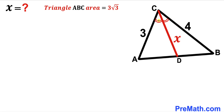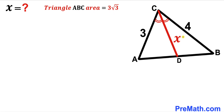Both of these angles are congruent. Furthermore, the area of triangle ABC is 3 times square root of 3 square units, and our task is to find the value of X.